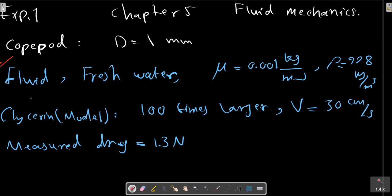We have model information: 100 times greater and the velocity is 30 cm per second. The drag force measures 1.3 N and we have the specification for glycerin, and the viscosity is equal to 1.5 kg per meter.